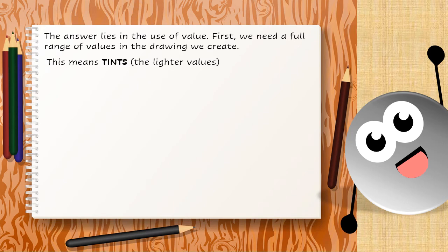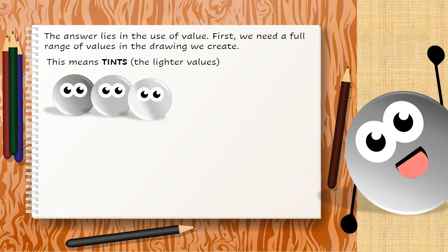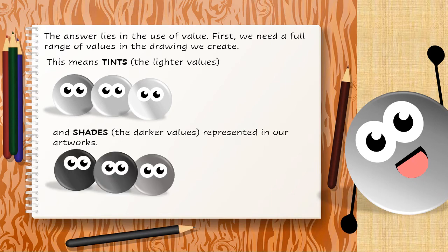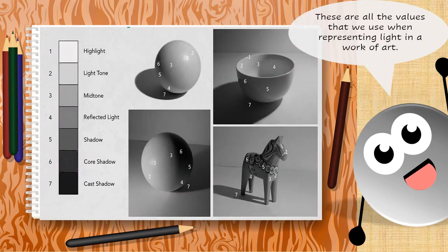First, we need a full range of values in the drawings we create. This means tint — the lighter values — and shade — the darker values — represented in our artwork. These are all the values that we use when representing light in an artwork.